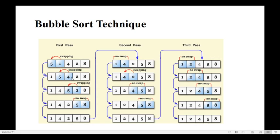So we swap: 4 comes to where 5 was and 5 moves right. Now compare the third and fourth elements — 5 and 2. Five is greater than two, so swap again. Then compare the fourth and fifth: 5 and 8. Here the first number is lesser than the second number, so no need to swap — keep them as is.